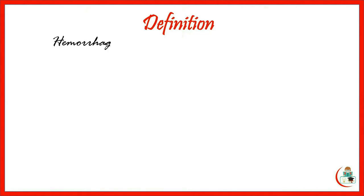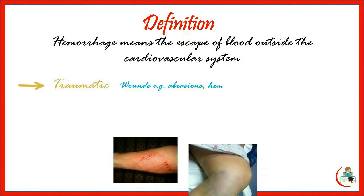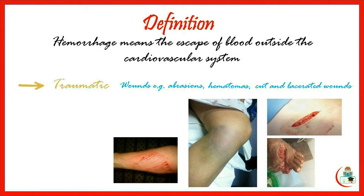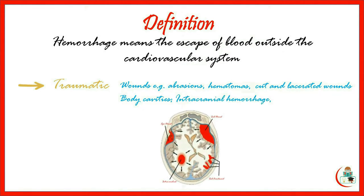Hemorrhage or bleeding is defined as escape of blood outside the cardiovascular system. It may be a life-threatening condition if not controlled in time. Causes include traumatic hemorrhage that may be due to wounds — for example, simple abrasions, hematoma, cut and lacerated wounds, and many other types. Bleeding may also occur in body cavities following trauma, such as intracranial hemorrhage after head trauma, or internal hemorrhage after abdominal trauma.